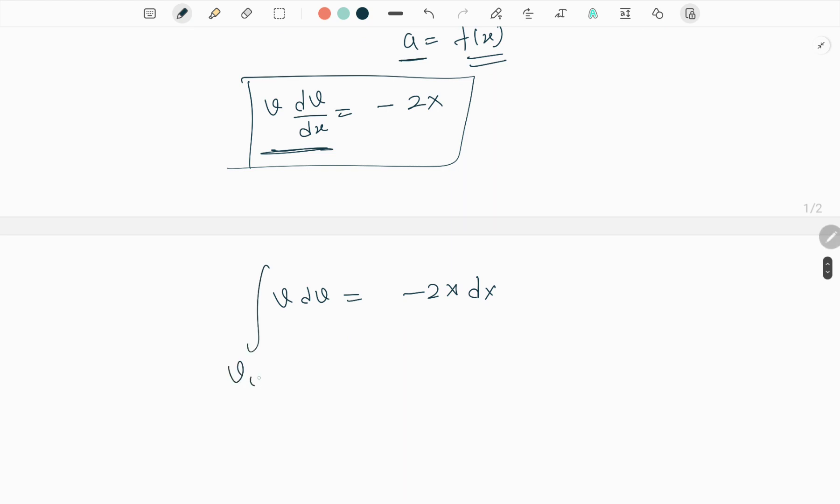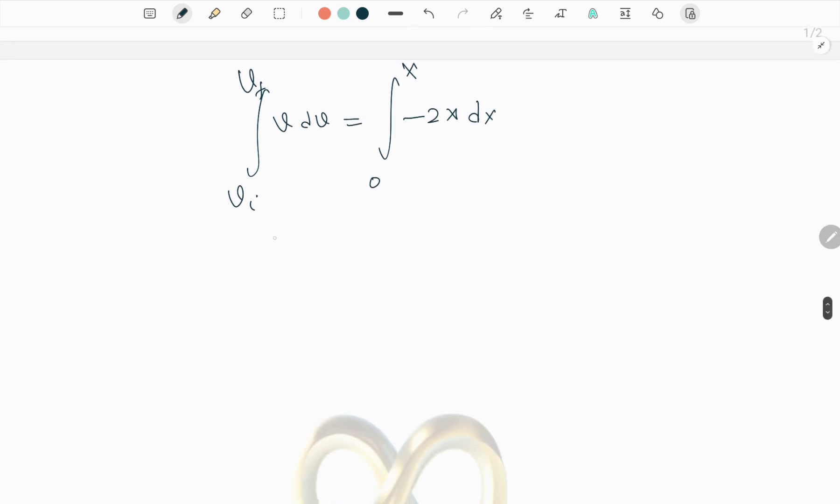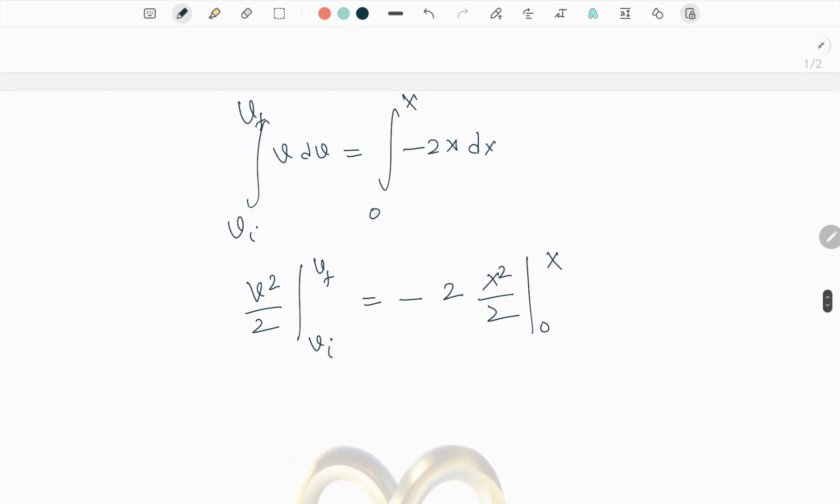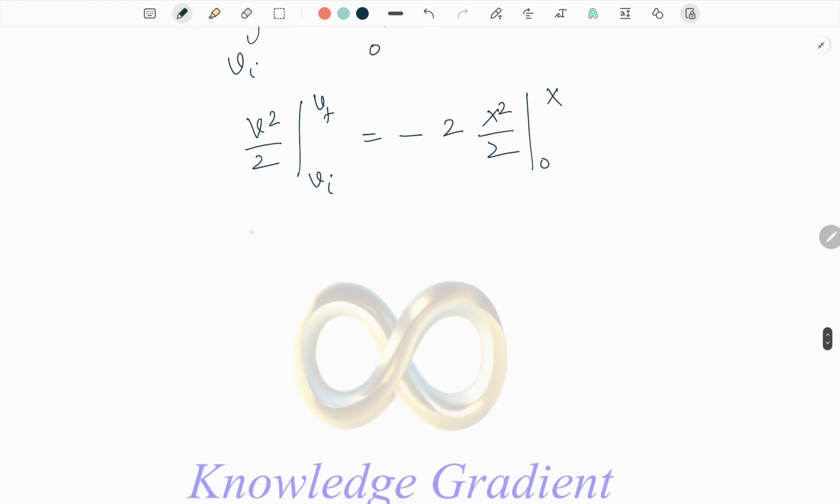So integrate vi to vf and 0 to x. That equals v squared by 2, vi to vf, minus 2x squared by 2, from 0 to x. There is no constant because there are limits. So here, vf squared by 2 minus vi squared by 2 equals minus x squared.